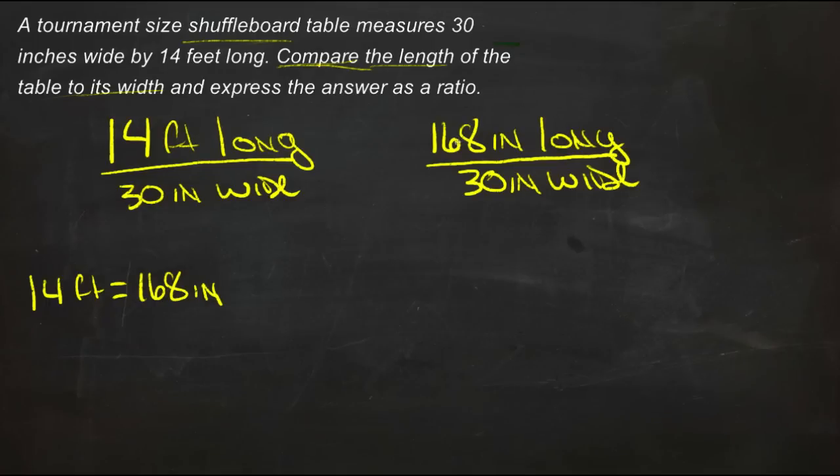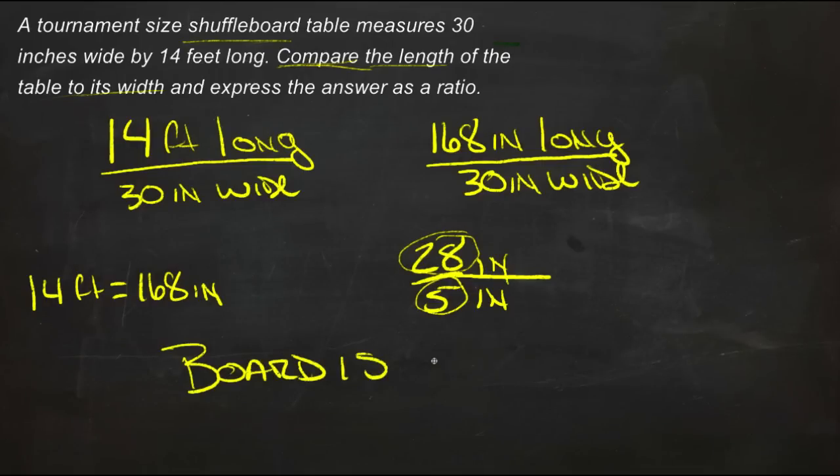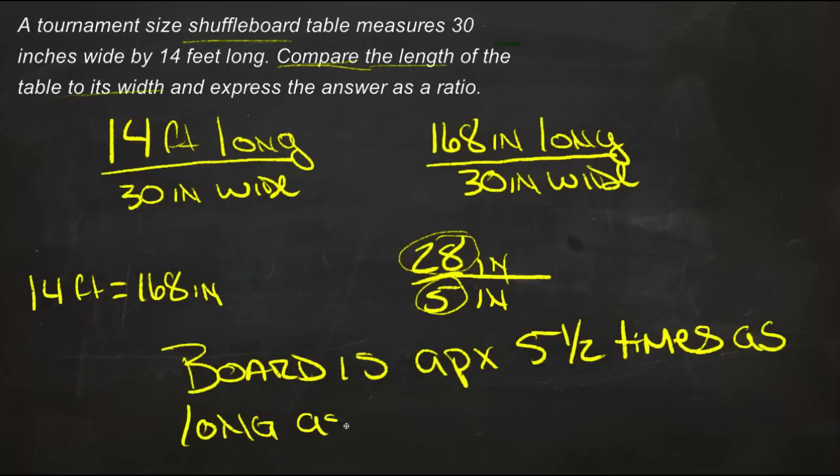Now it makes a little more sense. Now we can see obviously it's a lot longer than it is wide. But if we reduce this fraction I think it'll make even more sense. So 168 and 30, that reduces to 28 over 5. So the ratio is 28 to 5. That tells us that the shuffleboard, if it's 28 to 5, then it's a little more than 5 times as long as it is wide. So we could say that the board is approximately 5 and a half times as long as it is wide. And that really makes more sense. Now we can really get a picture for how it compares.